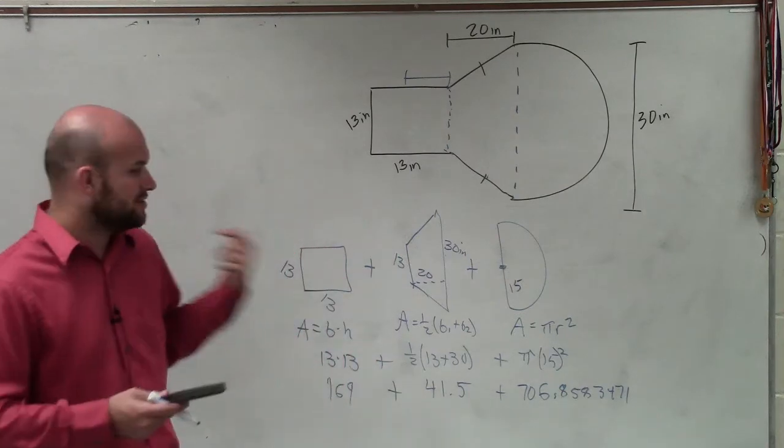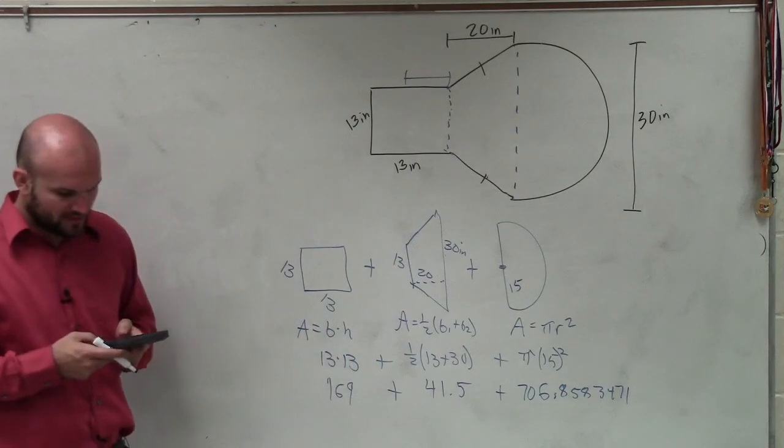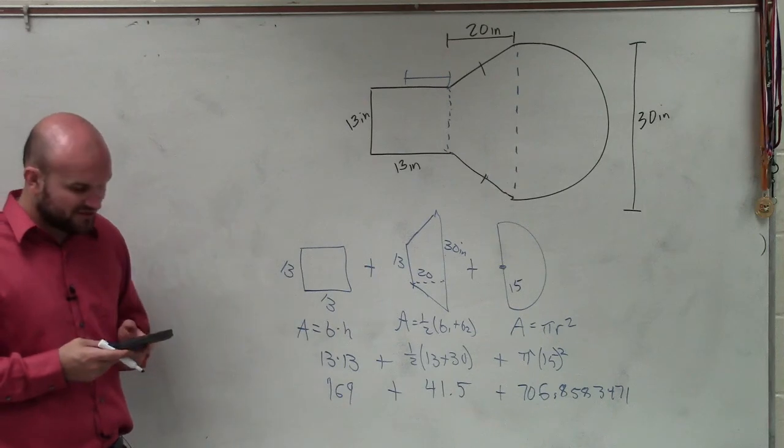And then 15 squared is going to be 225 times pi is going to be 706.8583471. Again, guys, I do not want to approximate until the very, very, or round my answer until the very, very end.